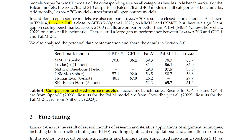LLAMA2's 70 billion results are on par or better than PaLM 540 billion on almost all benchmarks. However, there's still a large gap in performance between LLAMA2 70 billion and GPT-4 and PaLM 2L.